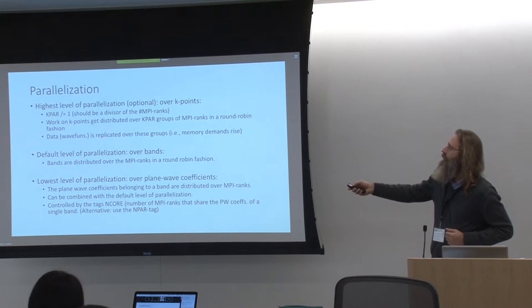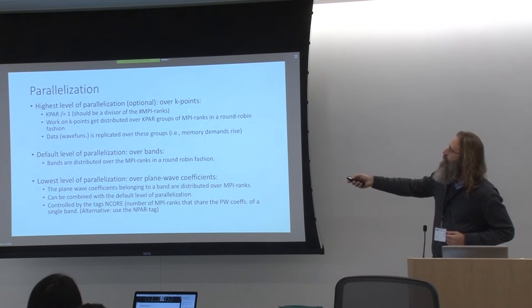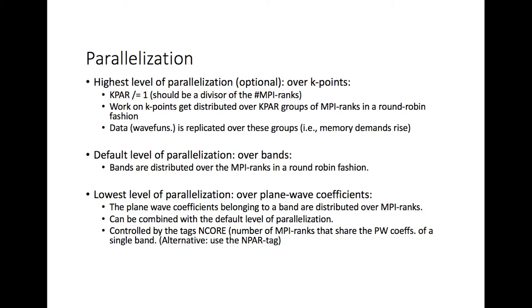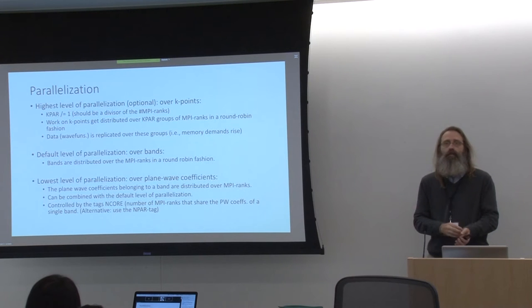This is an optional level. If you want to distribute your work over K points, you use the KPAR tag and set it to something other than one. If you set it to two, for instance, you create two subgroups of MPI ranks: the first group works on the first K point, the second group on the second one, the first on the third, and so on. The work on K points gets distributed over these groups - over KPAR number of groups - in a round-robin fashion.